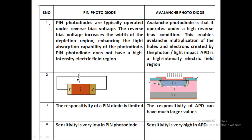Photodetectors are mainly used to convert optical power to electrical current. In an optical fiber communication system, we have a transmitter, the fiber communication system in between, and finally a receiver section. These photodetectors play a very key role in the optical receiver section. Today's class, we will discuss two types of detectors: one is the PIN photodiode and the second one is the avalanche photodiode. We are going to discuss the differences that exist between these two detectors.